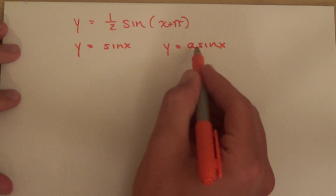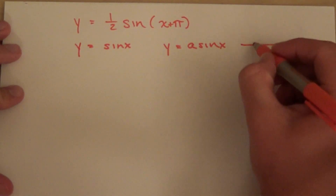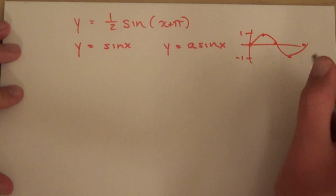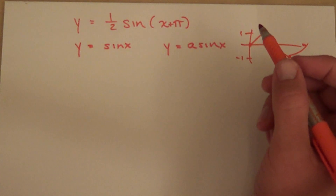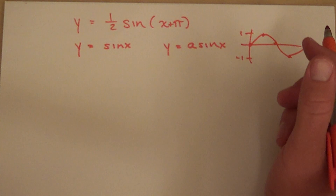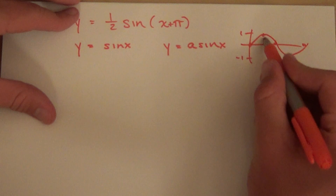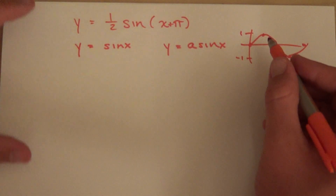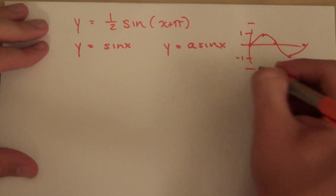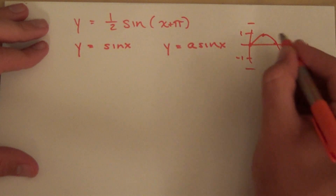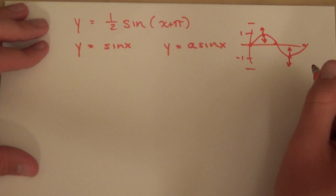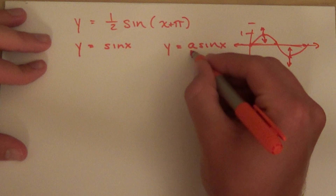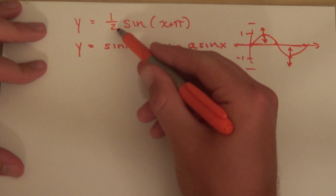This value a simply takes the graph — if this were the original sine function going between 1 and negative 1 — and if a is a fraction less than 1, it's going to shrink those values in closer to the x-axis. If it's greater than 1, it's going to stretch it away from the x-axis. So whatever you multiply by, all that's going to do is affect how far or how close all of the points on the function get to the x-axis. That's called the amplitude.